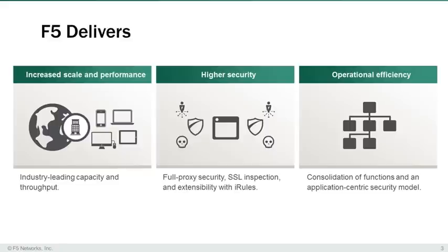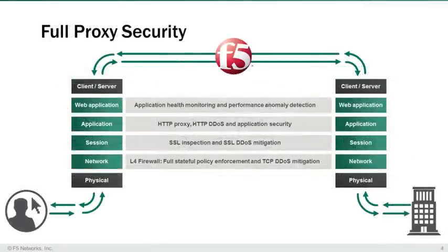The Big IP platform is a full proxy architecture, establishing a TCP connection with the user to the Big IP, and a separate TCP connection from the Big IP to the resources themselves, and is able to apply policies on either end. This allows organizations to inspect, manipulate, or simply drop traffic both on the way in and on the way out at any point along the stack, reducing business risks.